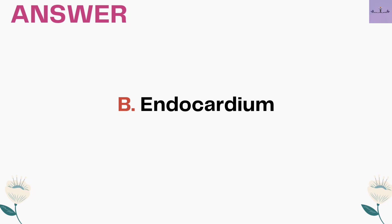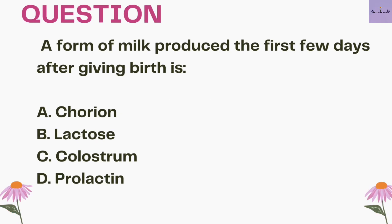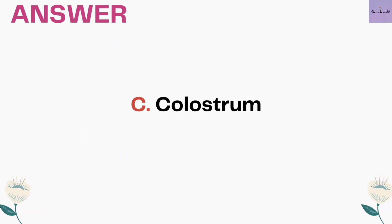Next question: a form of milk produced in the first few days after giving birth is — A. Chorion, B. Lactose, C. Colostrum, and D. Prolactin. The answer is option C, Colostrum. Colostrum refers to the first milk produced in the first few days after delivery.